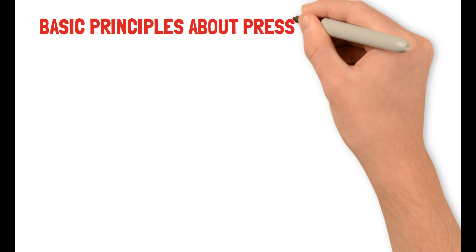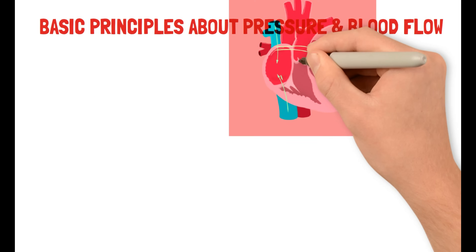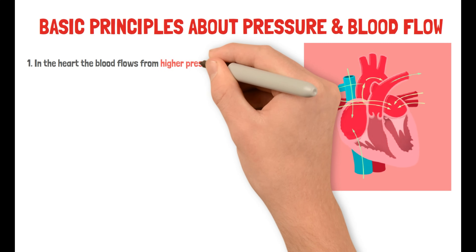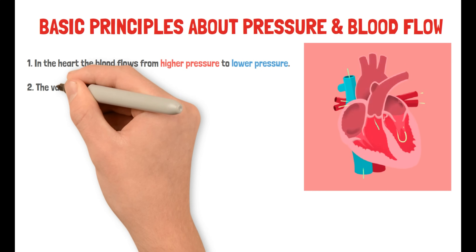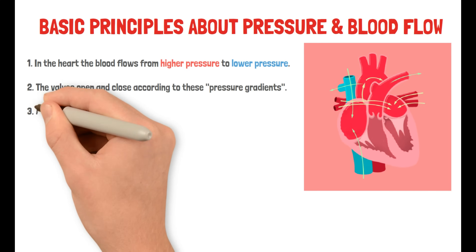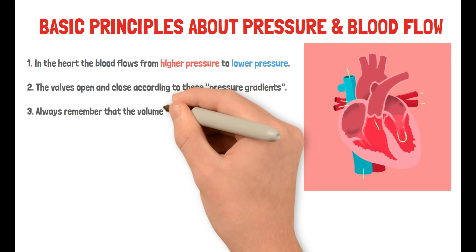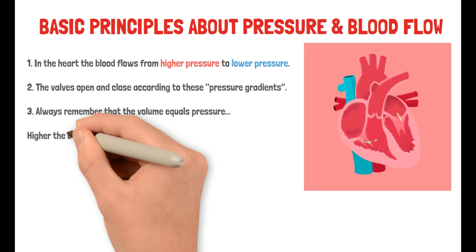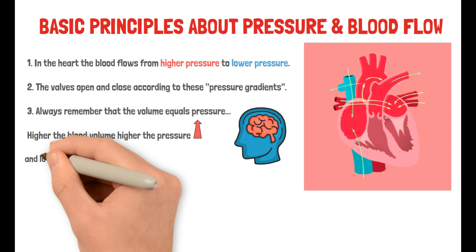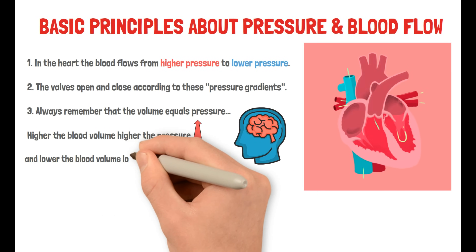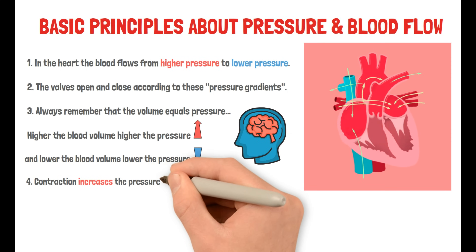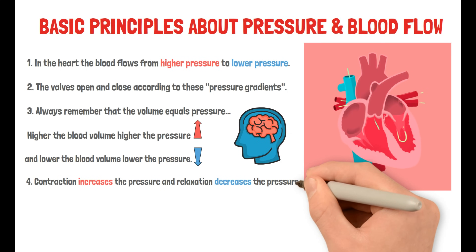Now let's talk about the basic principles about pressure and blood flow. In the heart, blood flows from higher pressure to lower pressure. Similarly, the valves open and close according to these pressure gradients. You always need to remember that volume equals pressure — higher the blood volume, higher the pressure, and lower the blood volume, lower the pressure. And finally, contraction increases the pressure and relaxation decreases the pressure.